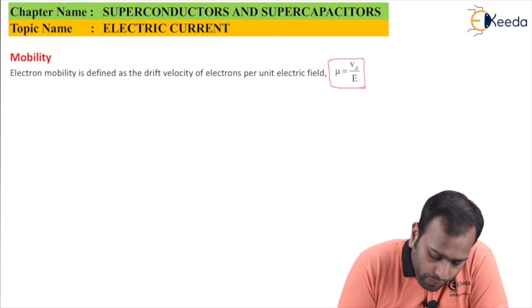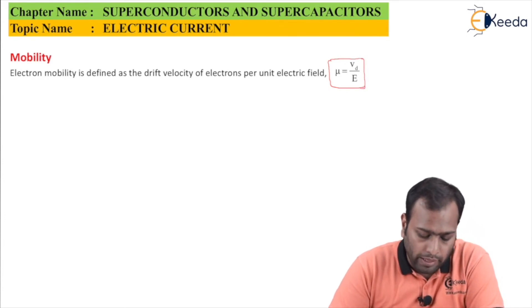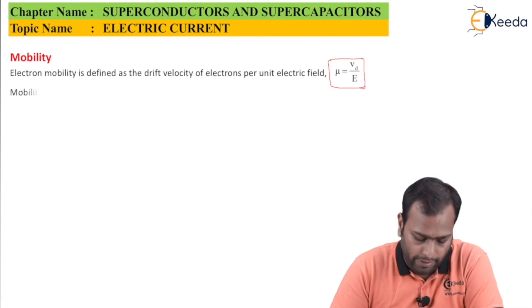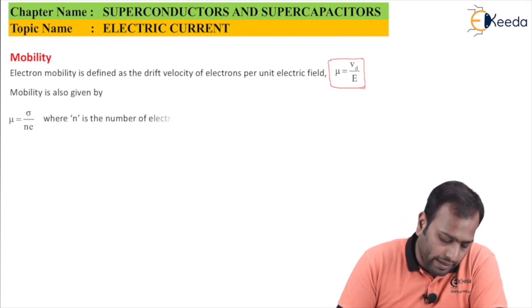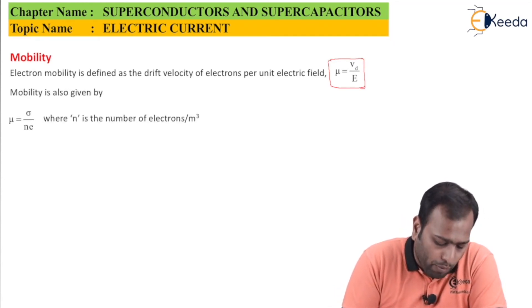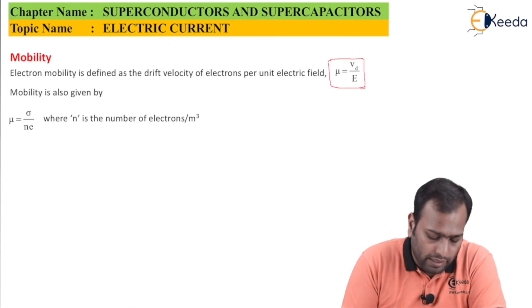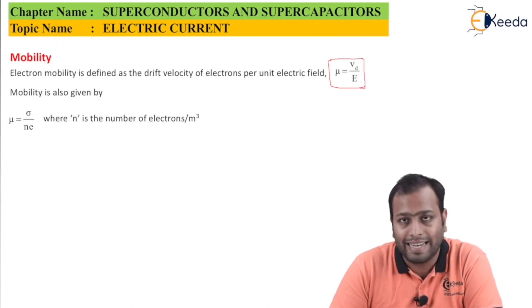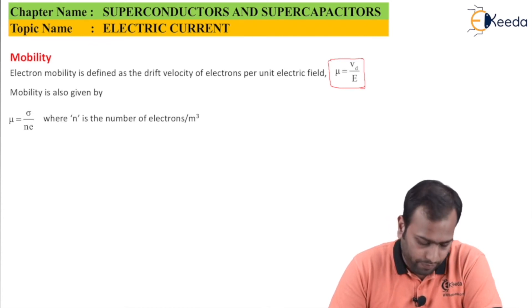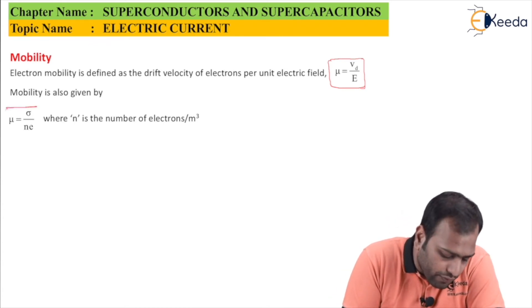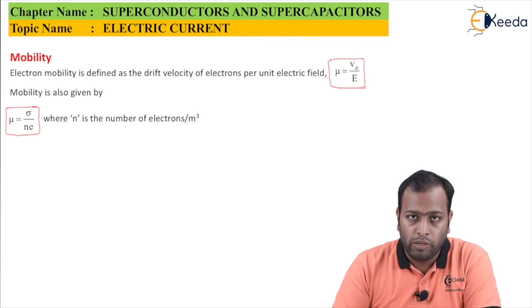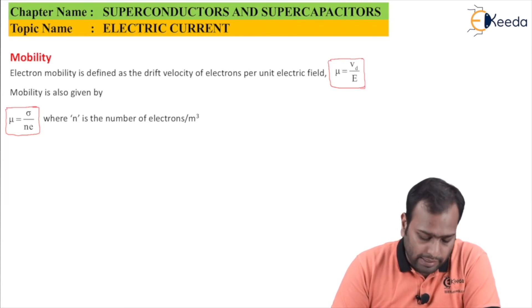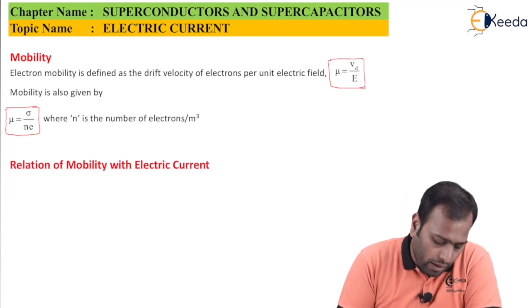Mobility can also be given by sigma upon n into E, where n is the number of electrons per meter cube, or we can also call them electron density. These are the two formulas for mobility. We'll be using them in solving numericals and derivations.